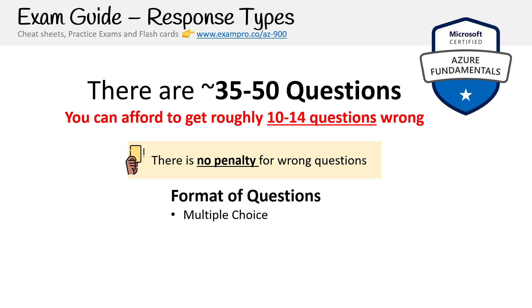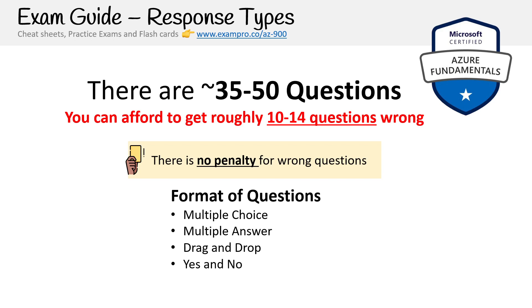In terms of question formatting, you have multiple choice, multiple answer, drag and drop, and yes or no. At associate and expert level certifications with Microsoft, there are way more question types. In our practice exams, we include case studies to help prepare you for that level of difficulty, even though they don't appear in the AZ-900 exam itself. If we don't do that, you'll feel ready for the AZ-104 and get totally blindsided, because the difficulty ramp is very steep. We're increasing the difficulty for your benefit — so if this course feels hard, that's going to make the next one really easy.